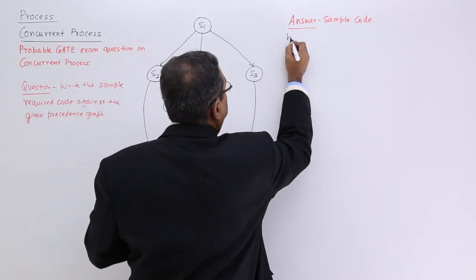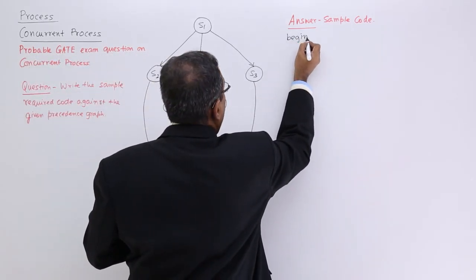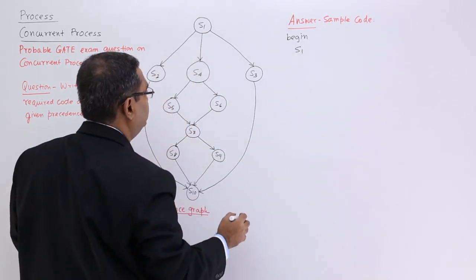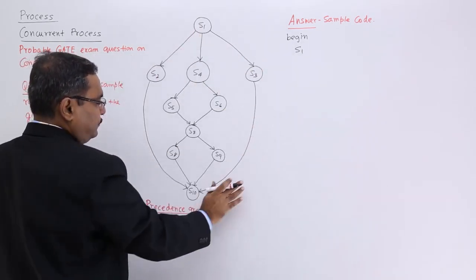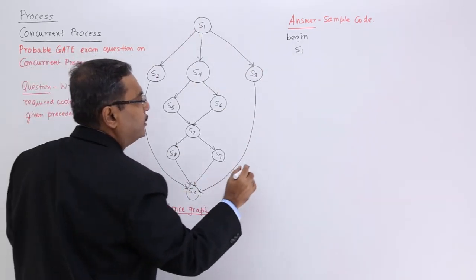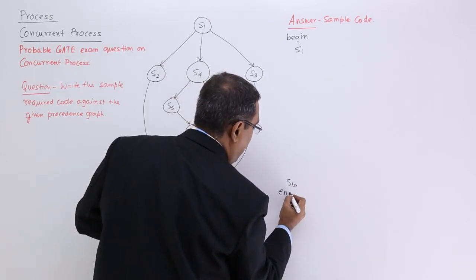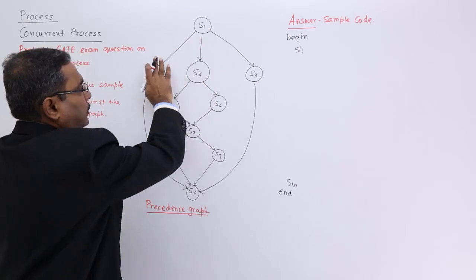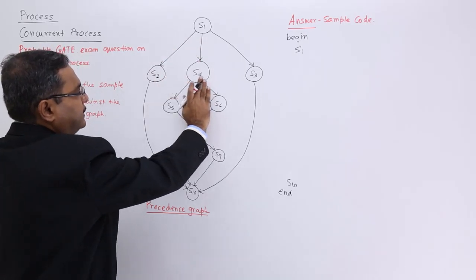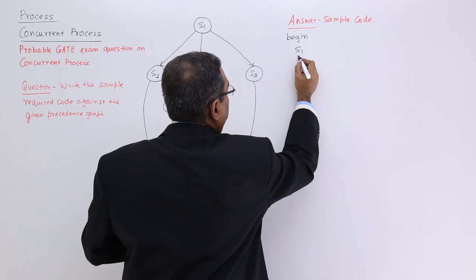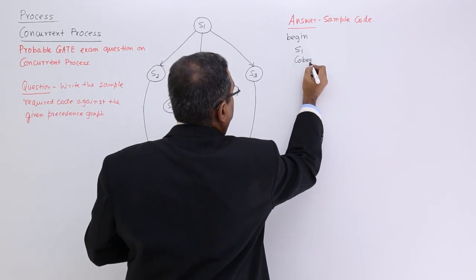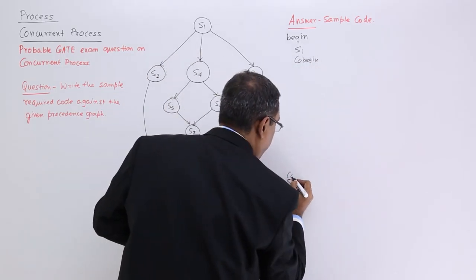I shall have begin, then here I shall have S1, and then S10 and end. Now, these will be working in parallel. So I shall go for co-begin. Here I shall have co-end.